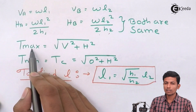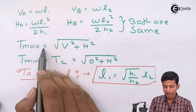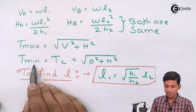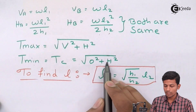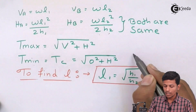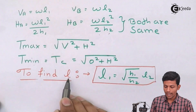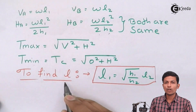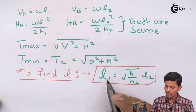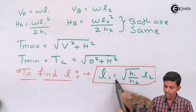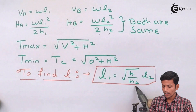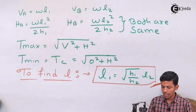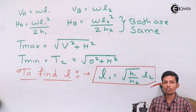Now how to find Tmax: as explained in previous videos, Tmax is nothing but the square root of V squared plus H squared — whichever is greater. T minimum is the square root of 0 squared plus H squared, which is simply the H value. To find the lengths L1 and L2 when not given in the exam, the formula is: L1 equals under root of (H1 upon H2) into L2.